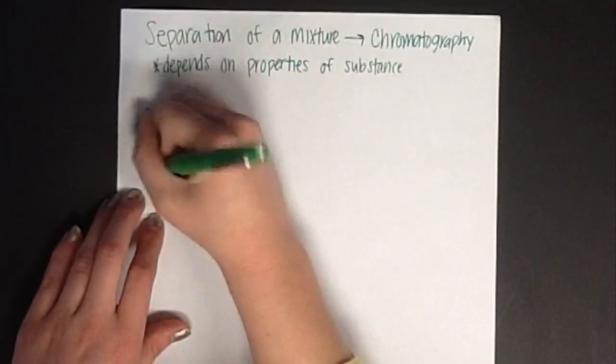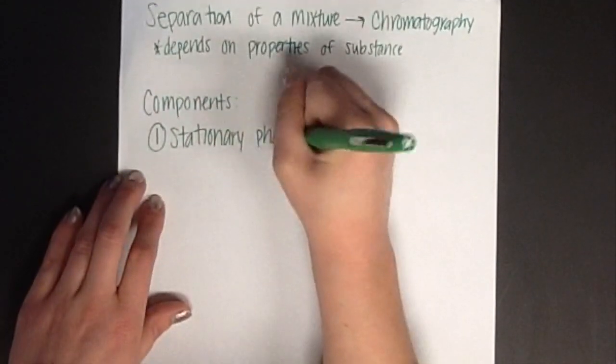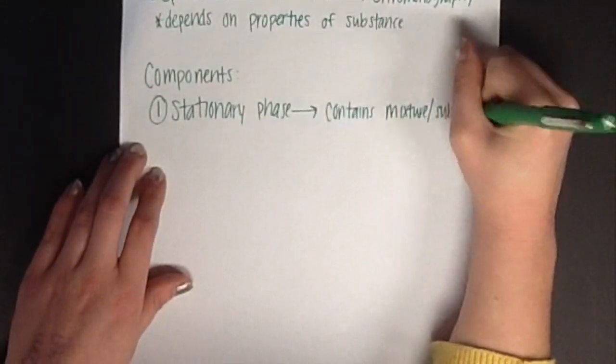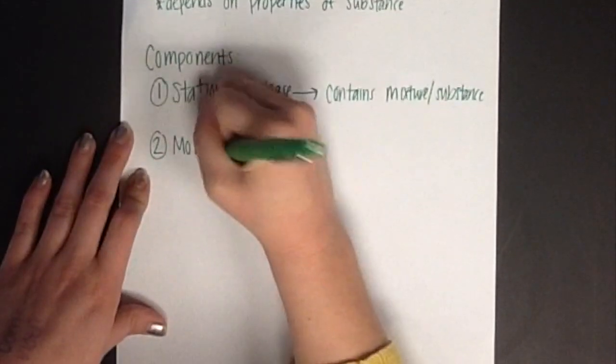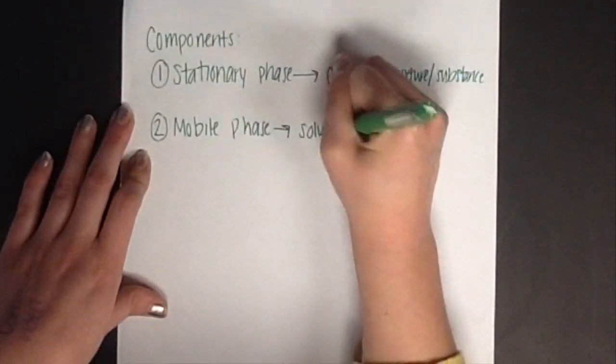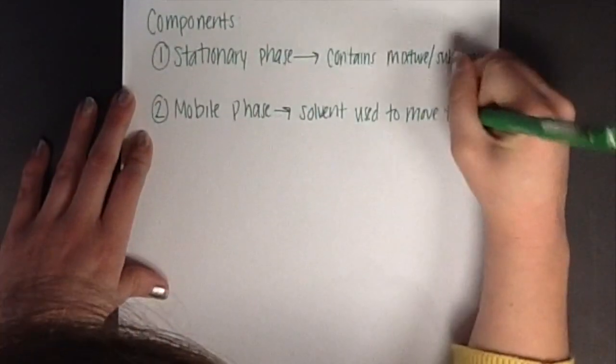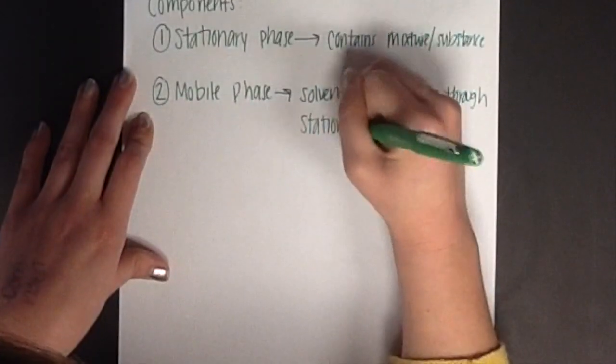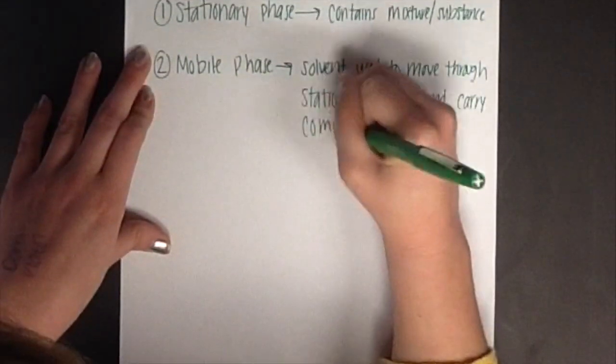There are two components of chromatography. One is the stationary phase, which contains the mixture or substance that needs to be separated, and the second is the mobile phase, which is the solvent used to move through the stationary phase and carry the components of the mixture.